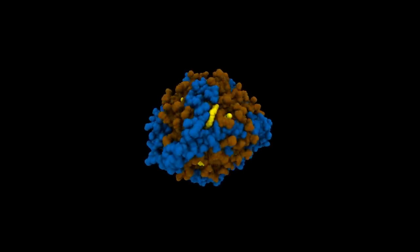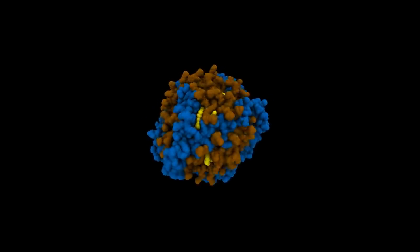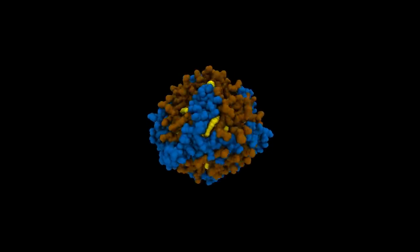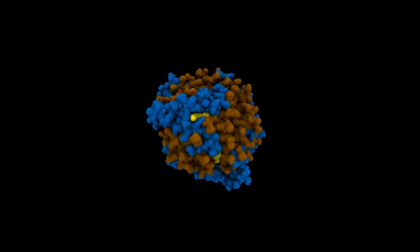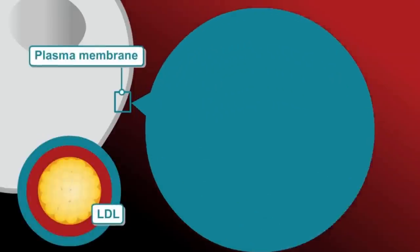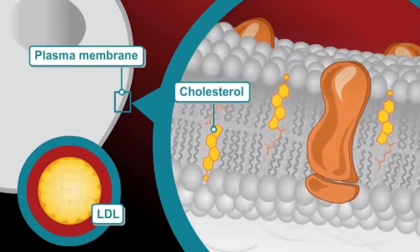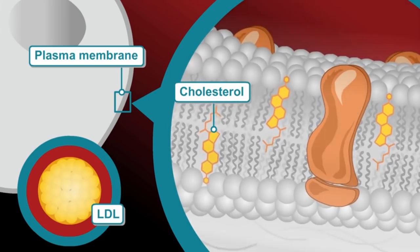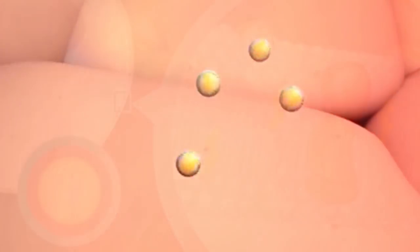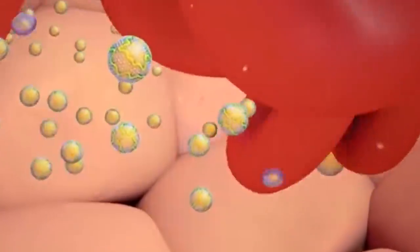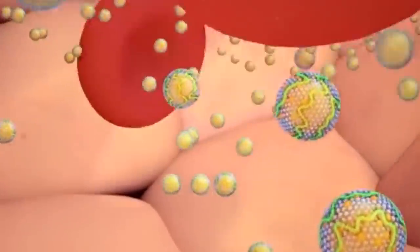Various types of lipoproteins have different purposes. HDL stands for high-density lipoprotein, also known as good cholesterol, because it carries cholesterol from parts of your body back to your liver, which then removes the cholesterol from your body. LDL stands for low-density lipoprotein, also called bad cholesterol, because a high LDL level leads to the buildup of plaque in your arteries.